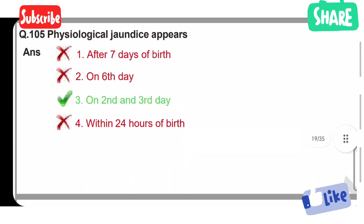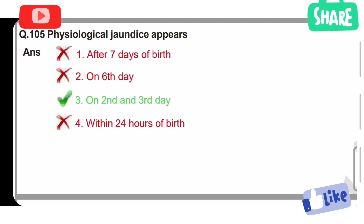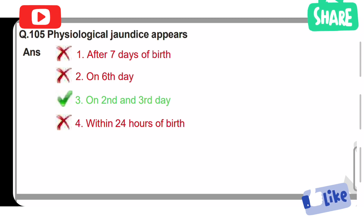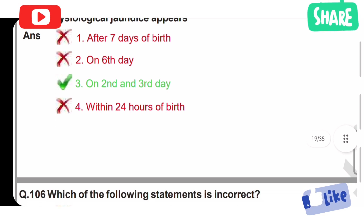Next, physiological jaundice appears — Option 1: after 7 days of birth. Option 2: on the 6th day. Option 3: on the 2nd and 3rd day. Option 4: within 24 hours of birth. Option 3 is the correct answer. Physiological jaundice appears on the 2nd and 3rd day of the baby's life.